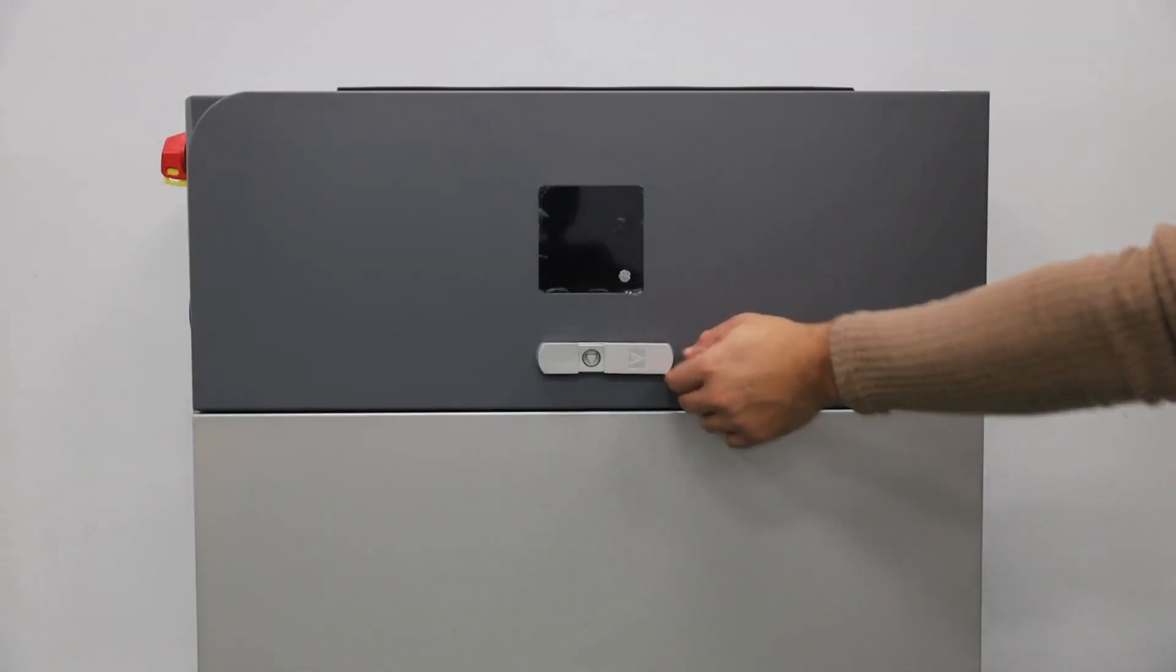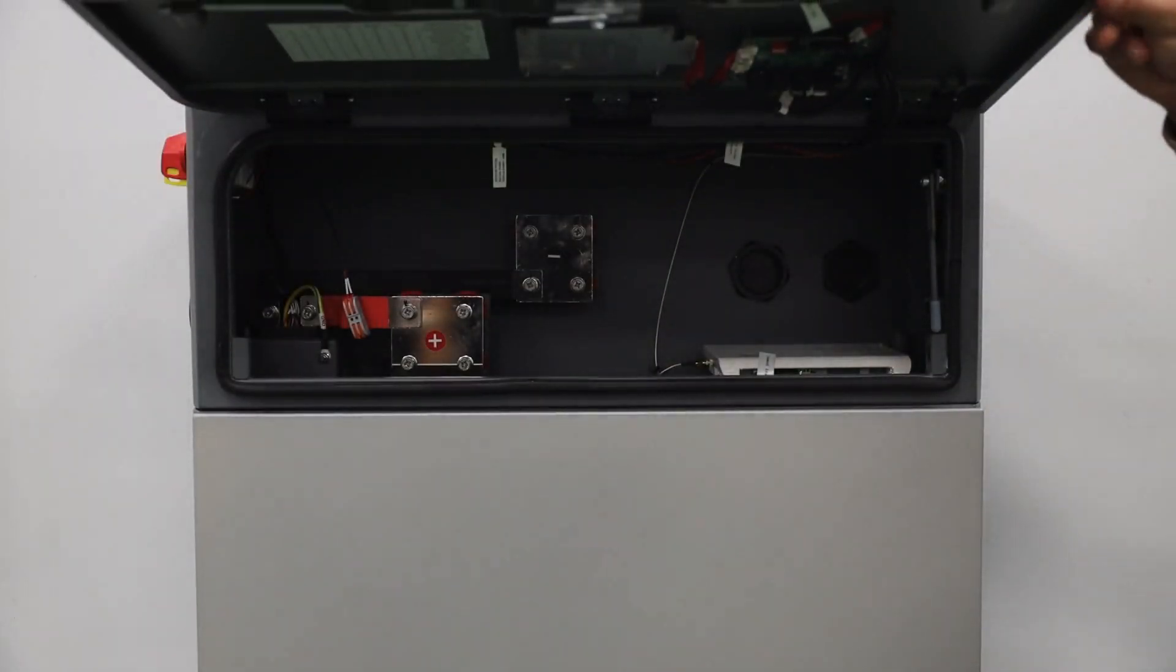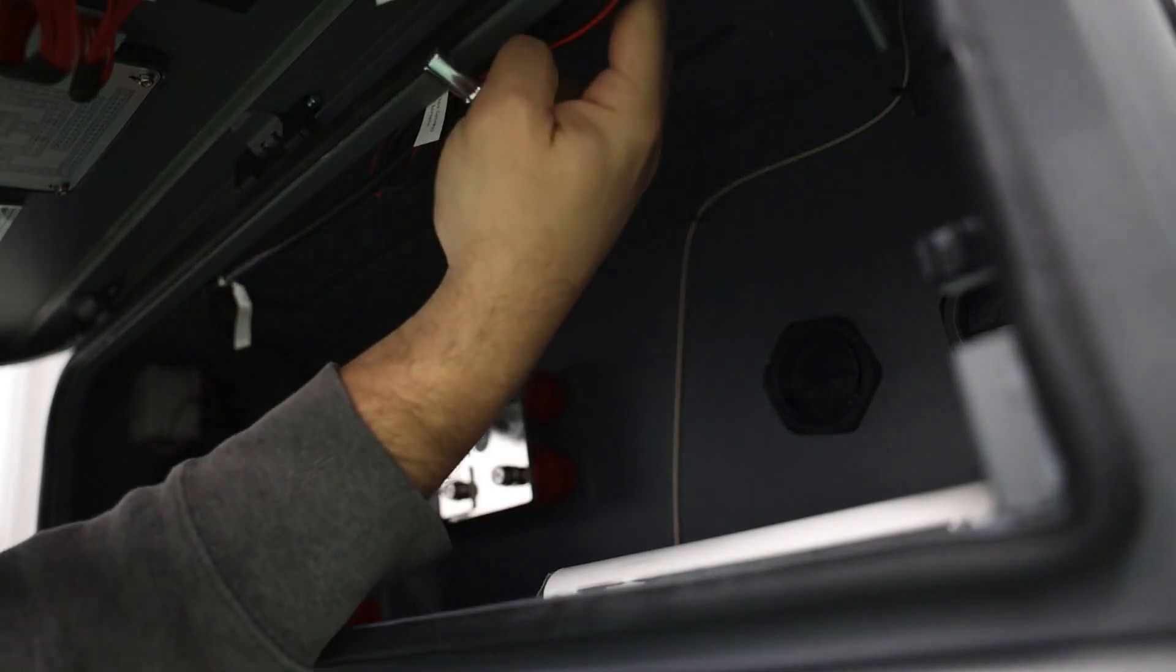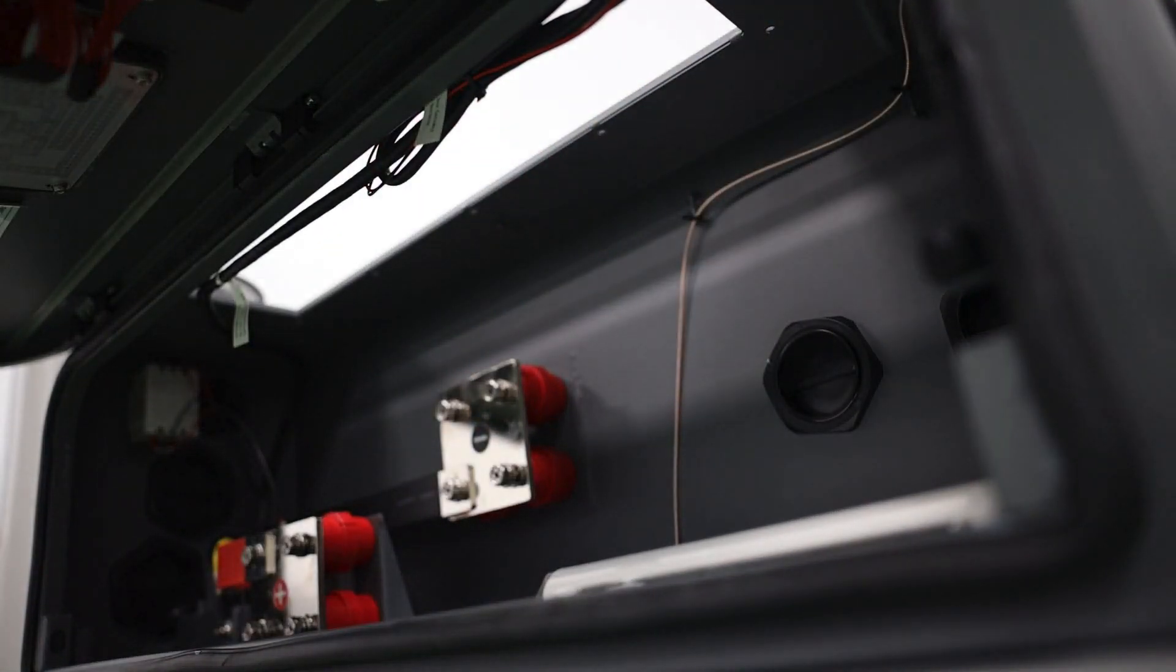Open the E-Way cover using the included key and prepare the connection ports for wiring. Using a socket wrench, detach the top part of the E-Way. Pro tip: Use an extended flexible bit holder.